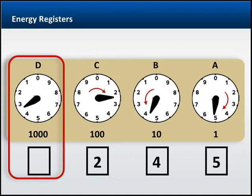And finally, register D, the 1000s column, again moves in the counterclockwise direction. Its pointer is past 3 but hasn't gotten to 4. So the unit associated with this register is 3.